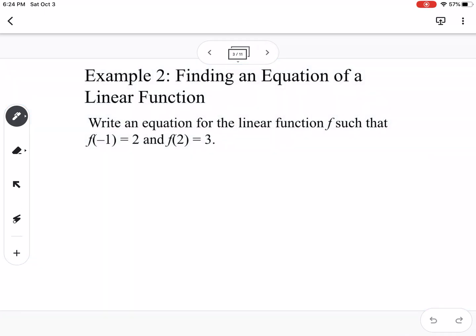So our first example is finding an equation of a linear function. It says to write an equation for a linear function such that f(-1) = 2 and f(2) = 3. So what that's giving us is two points. So we know that (-1, 2) and (2, 3) are our two points.